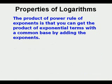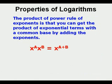The product of power rule of exponents states that you can get the product of exponential terms with a common base by adding the exponents. Here's an example: x to the a times x to the b equals x to the a plus b.